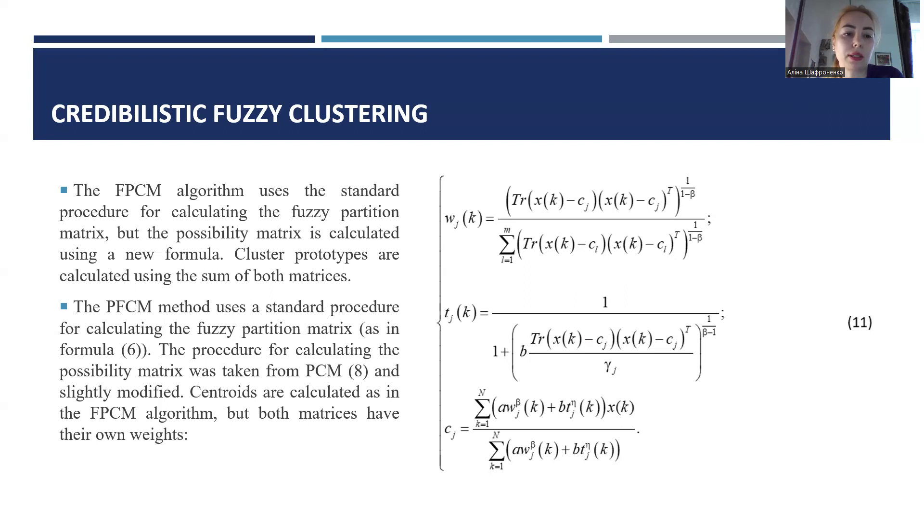The PFCAM method uses standard procedures for calculating the fuzzy partition matrix. The procedure for calculating the possibility matrix was taken from PCAM and significantly modified. Centroids are calculated as in the FPCAM algorithm, but both matrices have their own weights in formula 11.